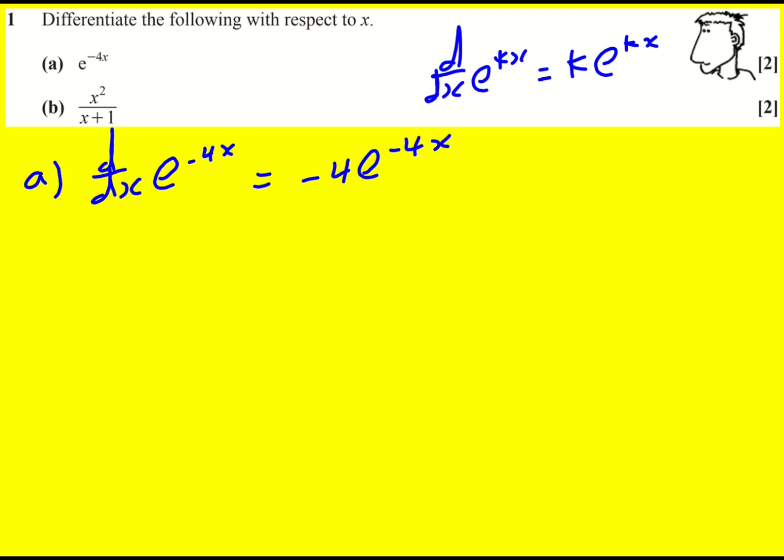So it's e to the something and that differentiates to itself. And then we times by the derivative of the inside, and the inside is this minus 4x part. So that's why we times by minus 4, and that's our answer.